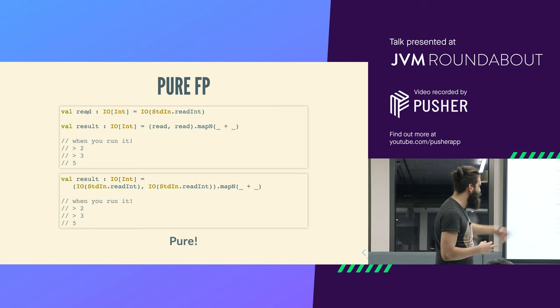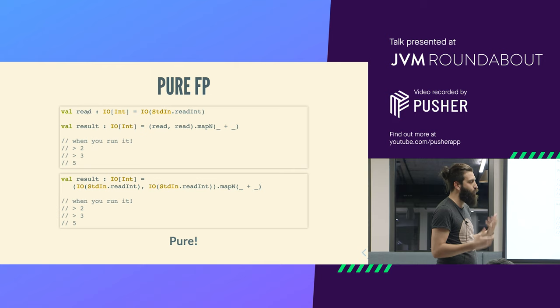Some people ask: what if you want the opposite behavior where you read once? It's simple: you say read, map, and then x plus x. You have a program; if you want to run it once, you just mention it once. So the mindset shifts from doing actions to composing programs.